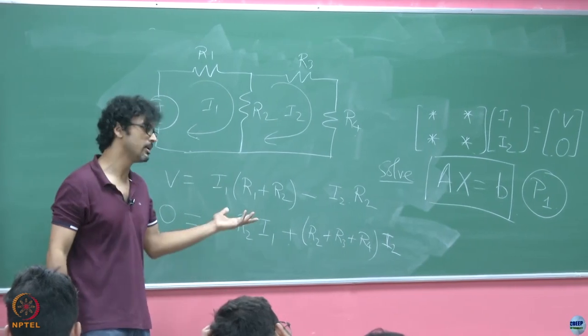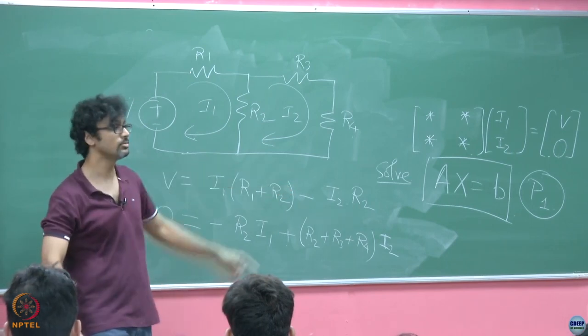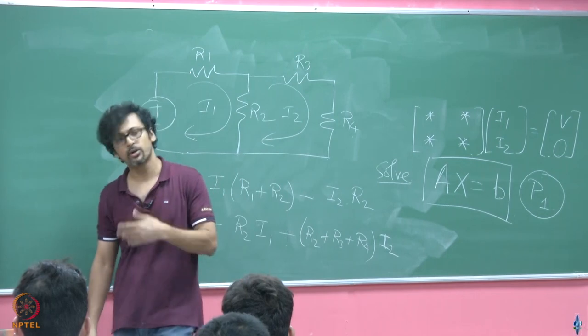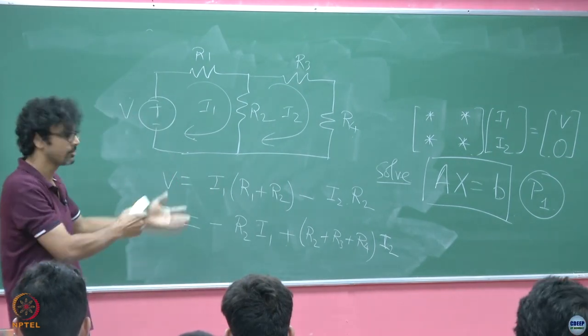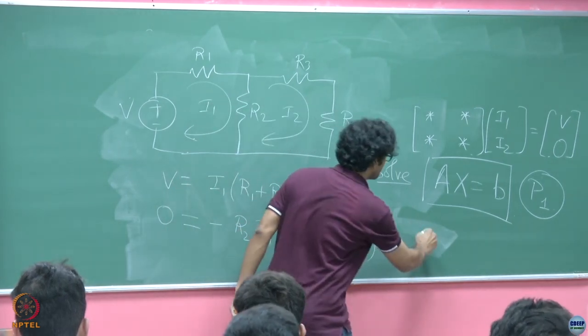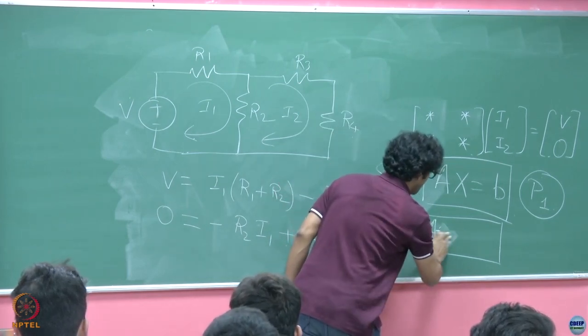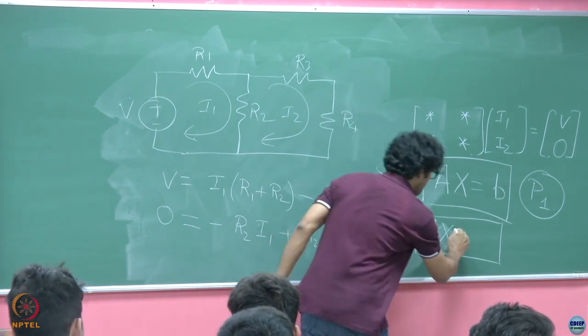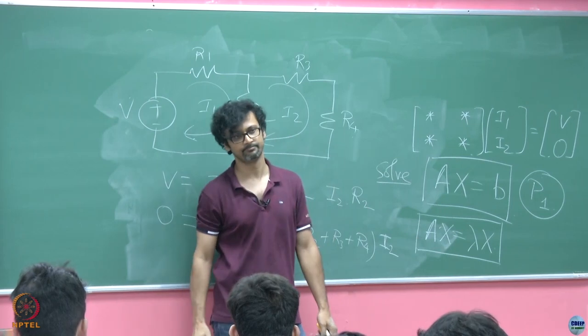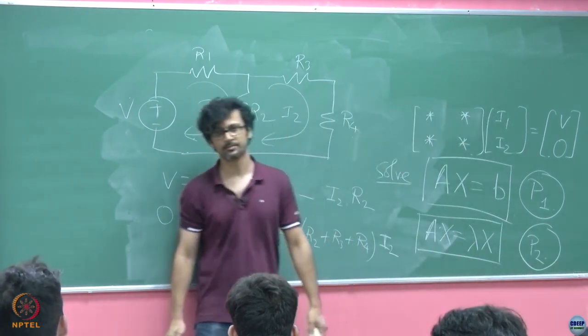Much of the course in fact, probably up to 60% to 3 quarters of this course will consider problems like this and how to get an answer to solving this problem. There is another problem which we shall try to solve in this course whose motivations I shall not introduce right away. I will introduce it only as and when we shall be dealing with it. That is the so called eigenvalue eigenvector problem which is of the form Ax is equal to lambda x where again x is an unknown but apart from that lambda is also an unknown. So these are the two problems we shall solve in this course.